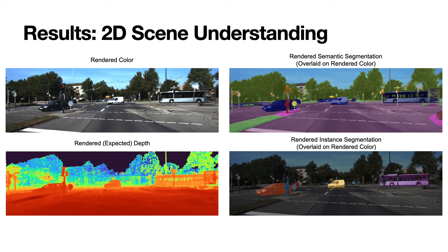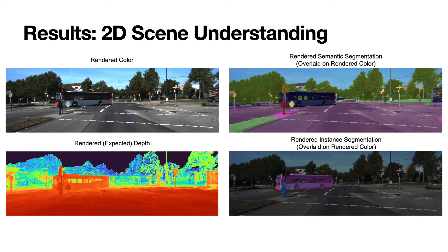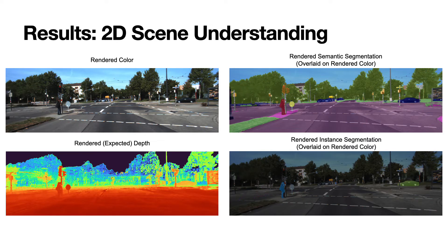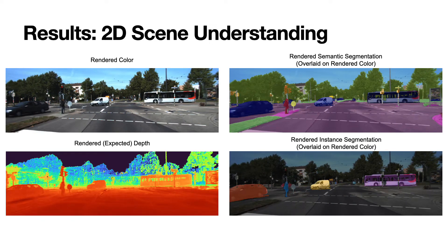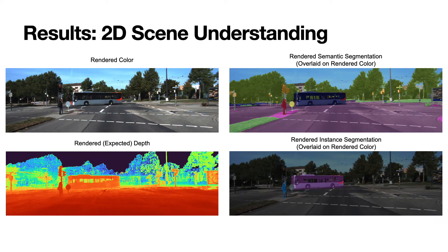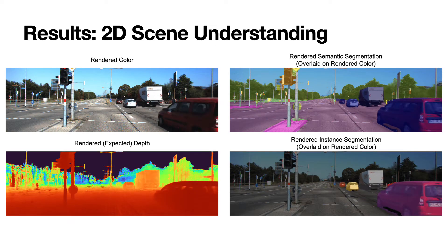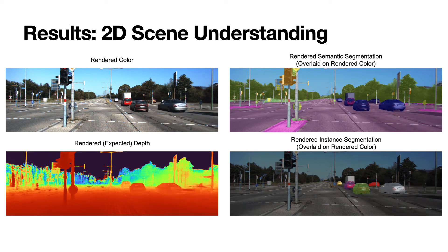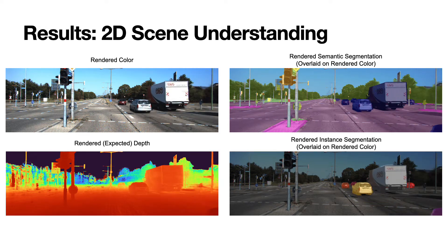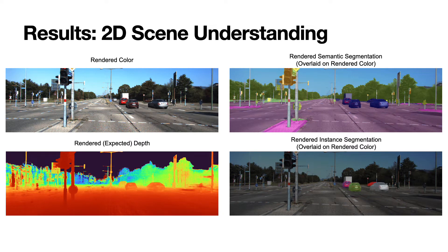We evaluate our method on challenging KITTI sequences. Here we show rendered image channels like color, depth, semantic, and instance segmentations obtained by simply rendering the learned neural representation of a KITTI scene. Note that these are challenging sequences since the videos are taken from forward-facing cameras and often have very little parallax. As can be seen, our model still reconstructs all objects with high fidelity.